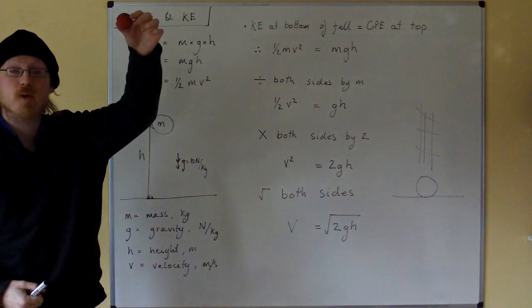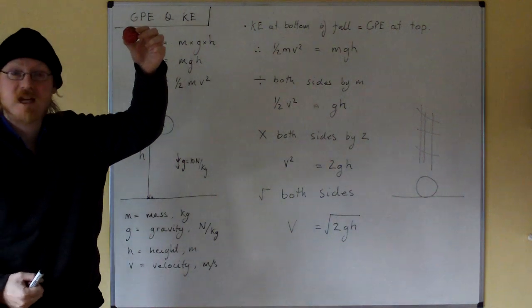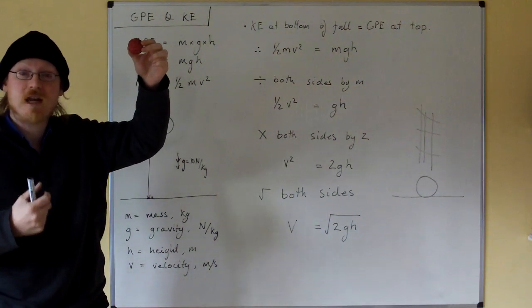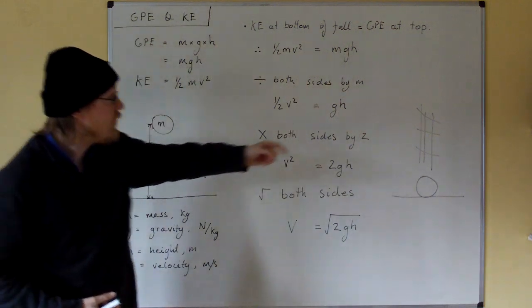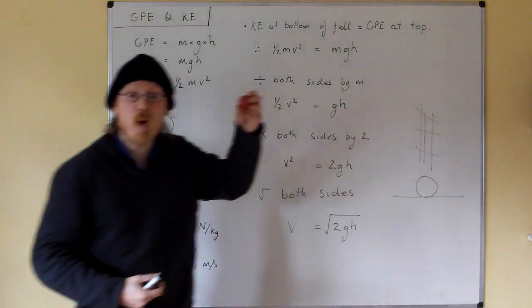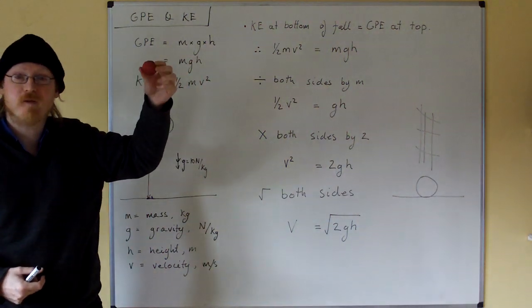So as I lift up this ball, I give it gravitational potential energy. When I let go, that gravitational potential energy is turned into kinetic energy. The kinetic energy is greatest when the ball is at the bottom of its fall, just before it hits the ground.